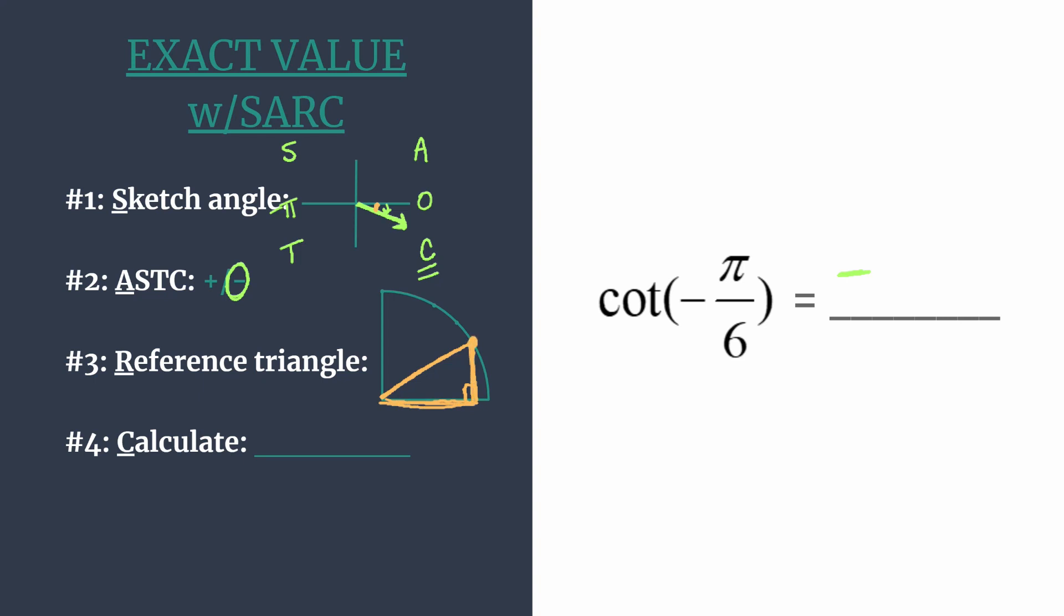And because we know our unit circle, if you don't, be sure to check that out. There are lots of great ways to learn that. I definitely will post some videos about that. But we know that this 30, 60, 90 triangle has coordinates that are the square root of 3 over 2 for the x and 1 half for the y.